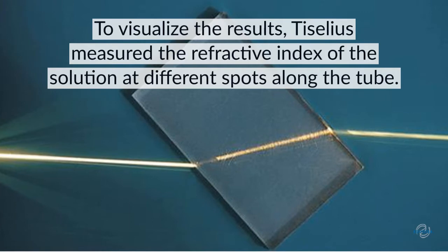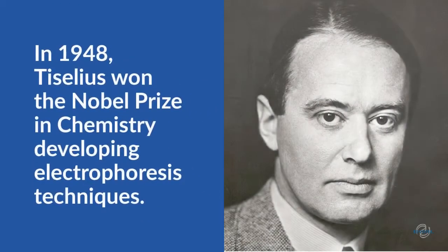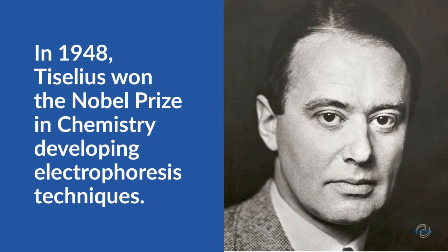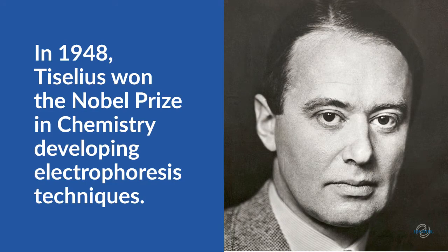A change in this measurement, known as the refractive index, indicated the presence or absence of a protein. In general, each zone represents molecules of a different charge. In 1948, Tiselius won the Nobel Prize in Chemistry for developing this technique, which he called moving boundary electrophoresis.